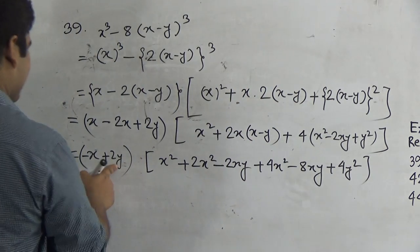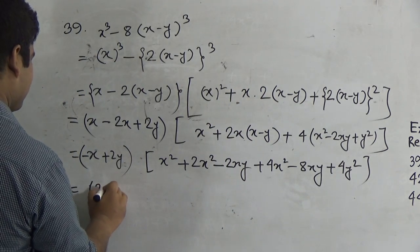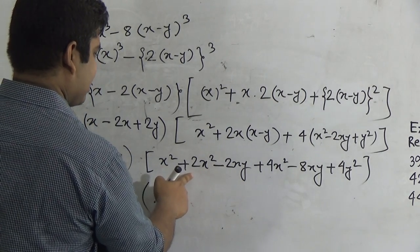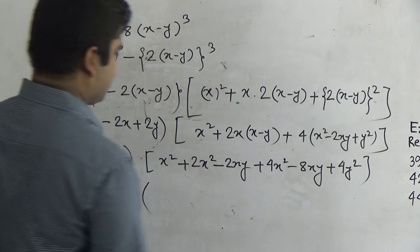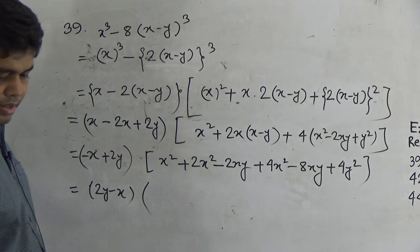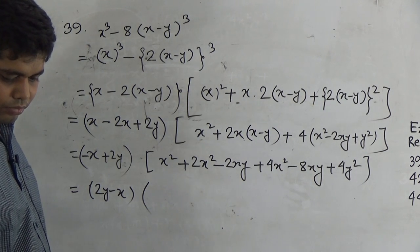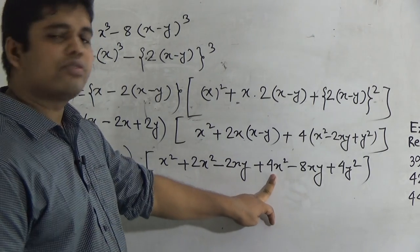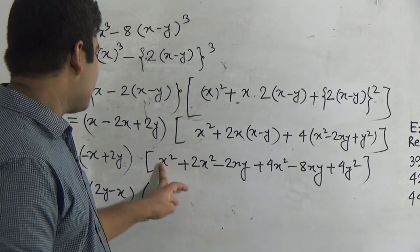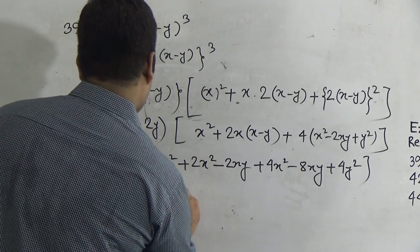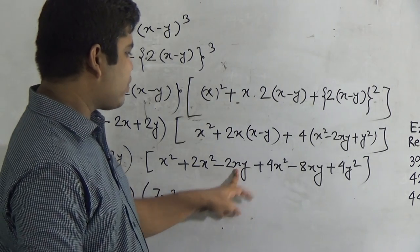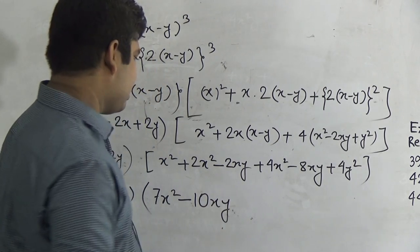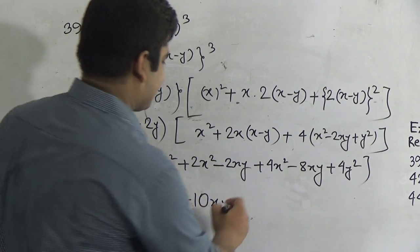Now we can write this as (2y minus x). And notice: x², 2x² and 4x². That is 6x² — wait — 2x² plus 4x² is 6x², plus x² gives 7x². Next, minus 2xy minus 8xy means we do addition and we get 10xy. Then 4y² is written here.